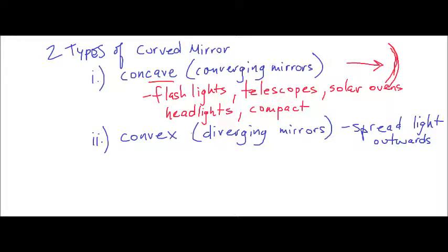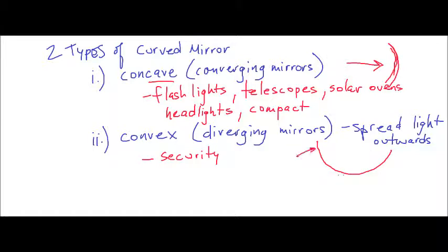Examples of convex mirrors include security mirrors you'll see at the mall or a convenience store. Because they curve outwards — almost like a ball — you're able to see so much more. You'll also find them at ATMs, allowing you to see behind and around you.